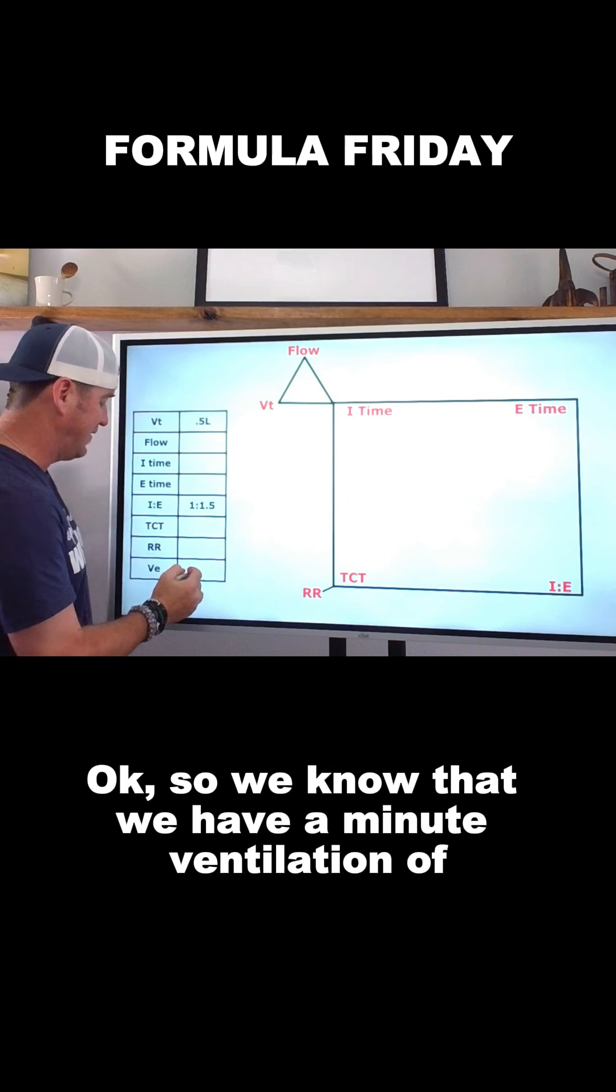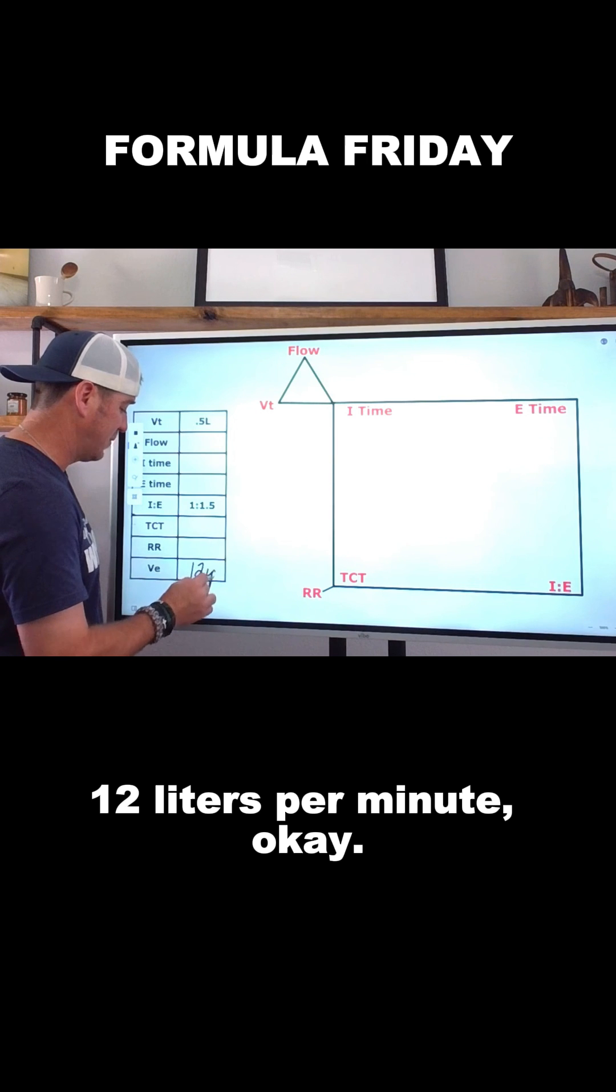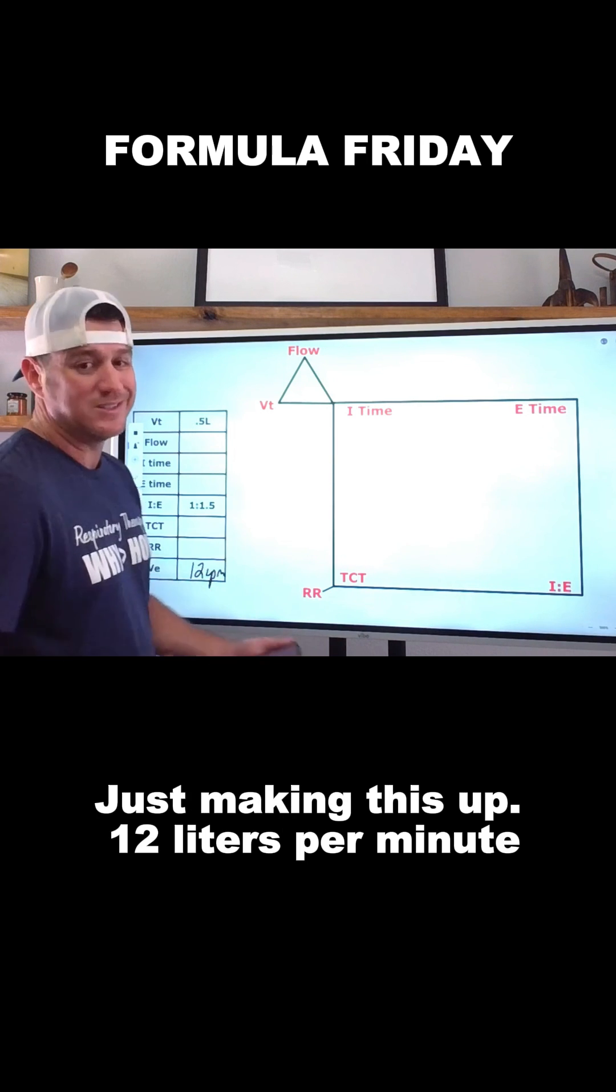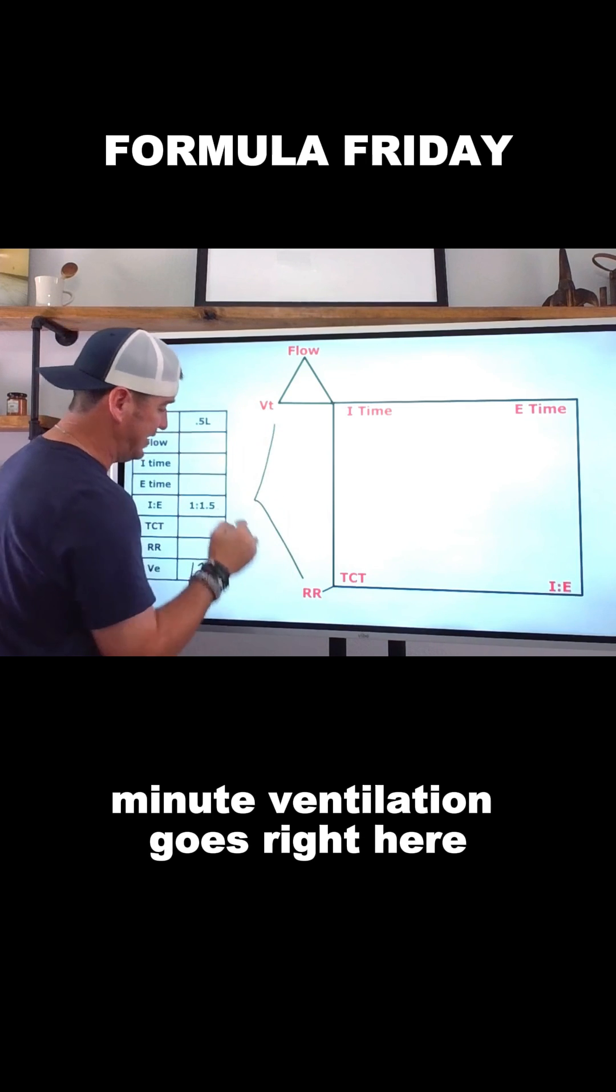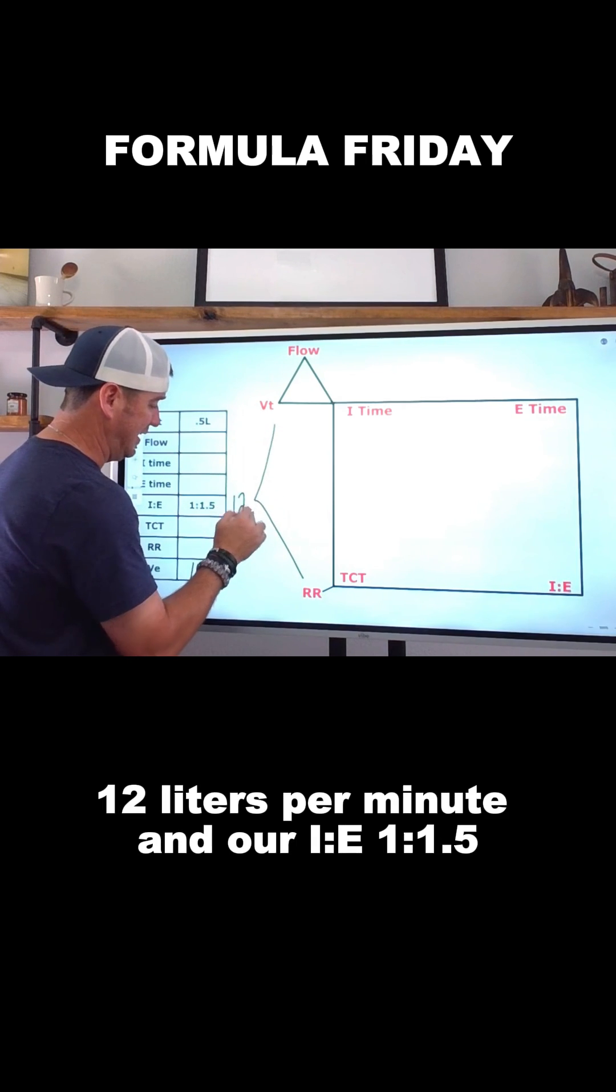So we know that we have a minute ventilation of 12 liters per minute. I'm just making this up, 12 liters per minute. So over here, remember, minute ventilation goes right here, 12 liters per minute.